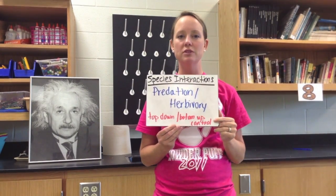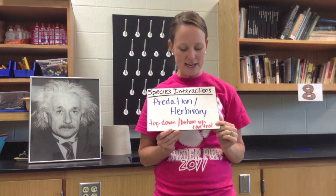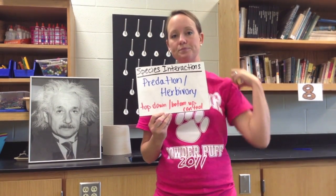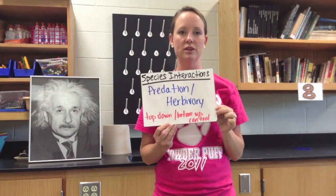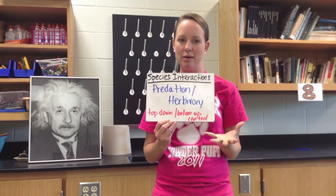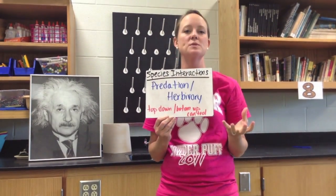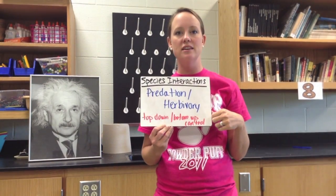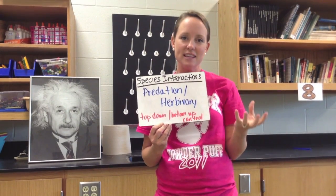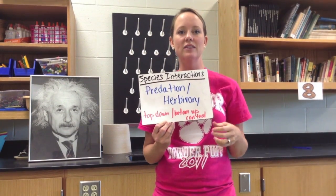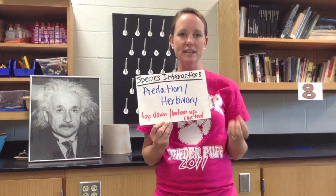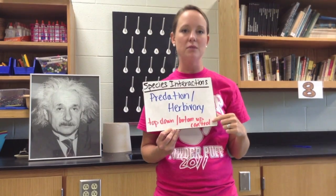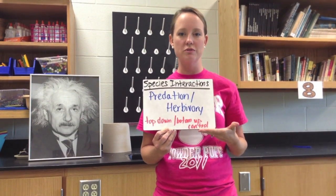We can describe these relationships as either top-down or bottom-up control, depending on which level of the food web is controlling the numbers. For example, a population of rabbits has more food in spring, so their population thrives. We also see a rise in the number of predators that eat the rabbit, because they have more of a food source. When wintertime comes and their food source shrinks, the numbers of rabbits shrink and their predators shrink as well. That is called bottom-up control because it's controlled by the lower trophic level.